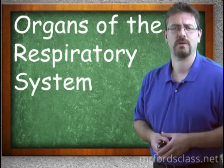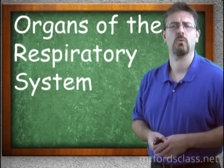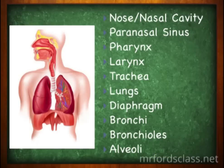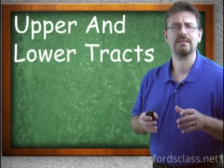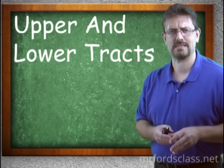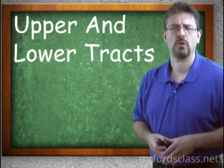The anatomy of the respiratory system is composed of the following organs. The nose, the nasal cavity, the paranasal sinuses, the pharynx, the larynx, the trachea, the lungs, the diaphragm, the bronchi, the bronchioles, and the alveoles.